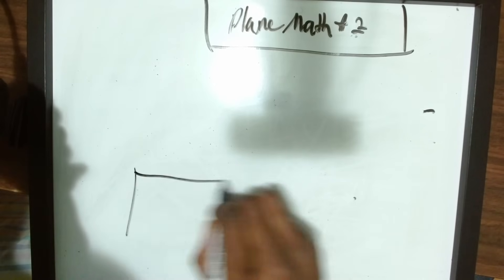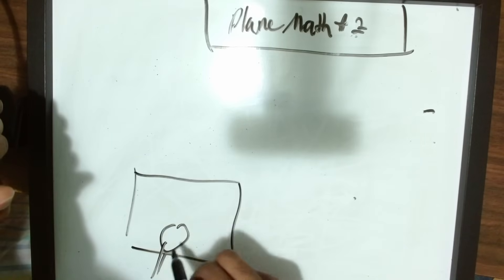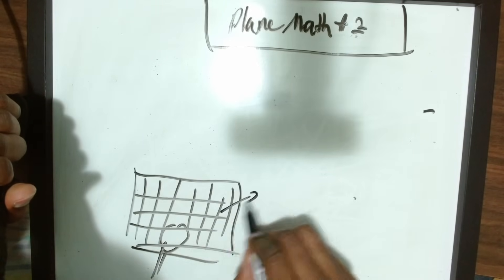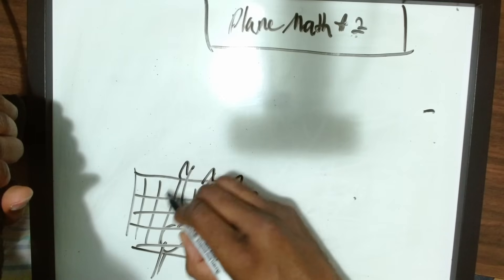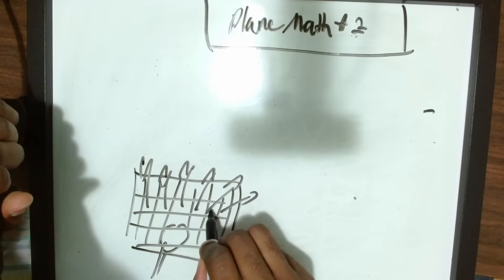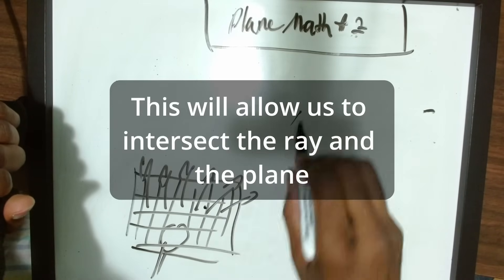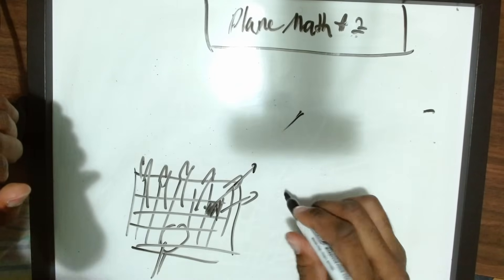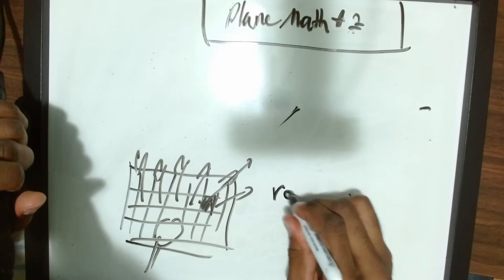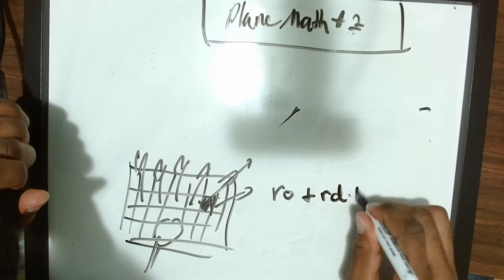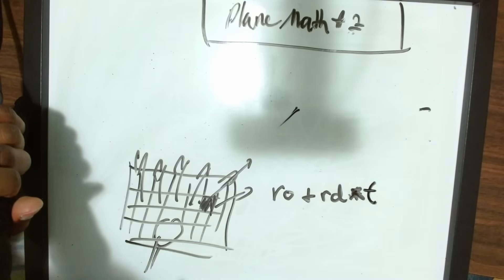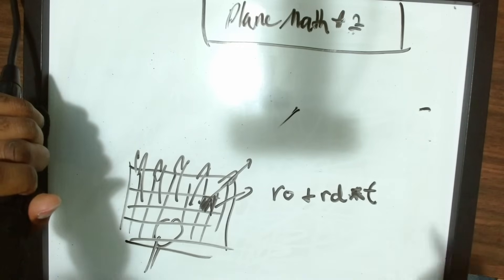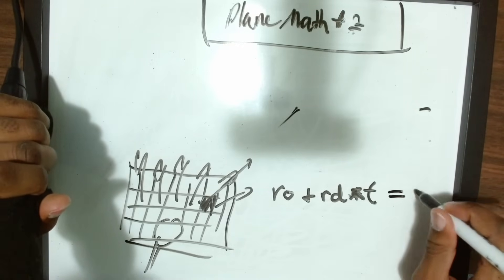We have our screen that we're sitting behind, and for each pixel we need to calculate a ray going into the world to intersect it, know where it is, and color it accordingly. We can describe a ray as: ray origin plus ray direction times some distance t into the ray.